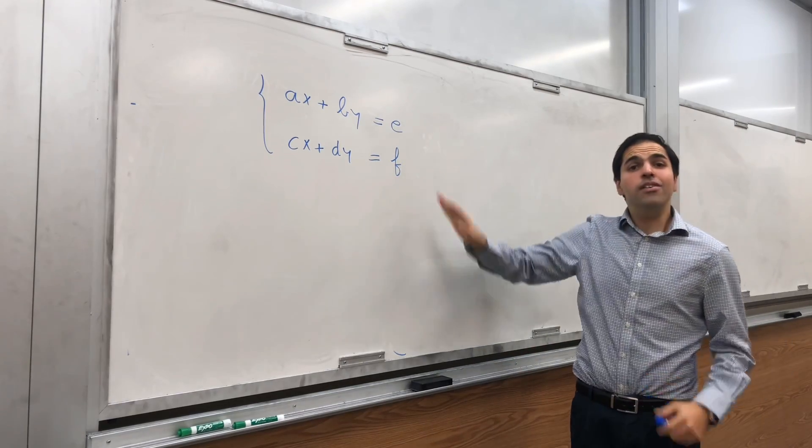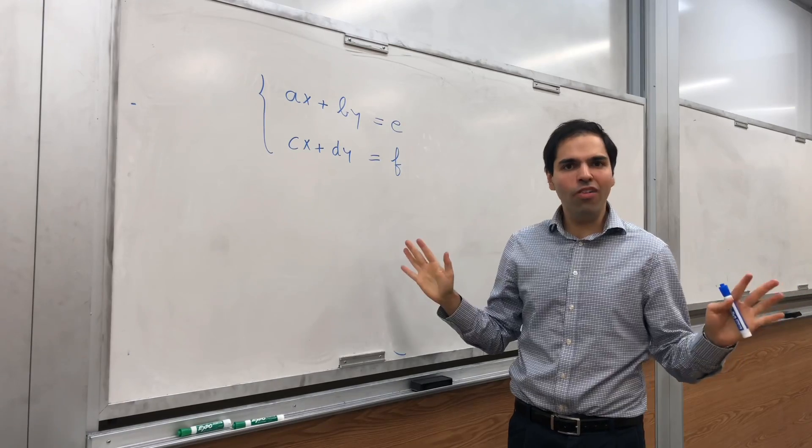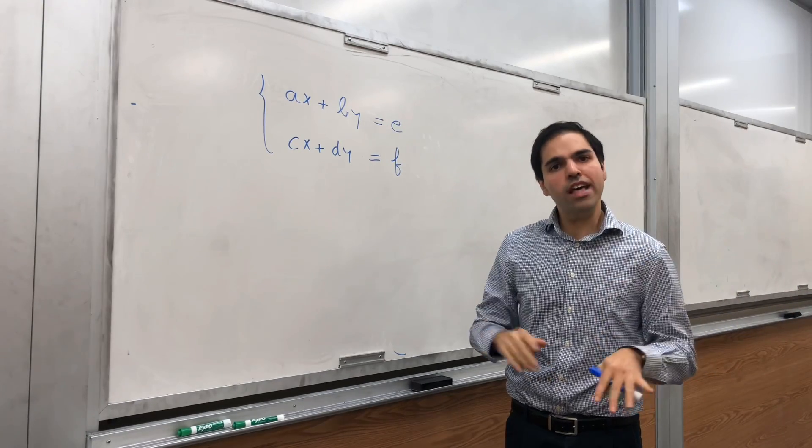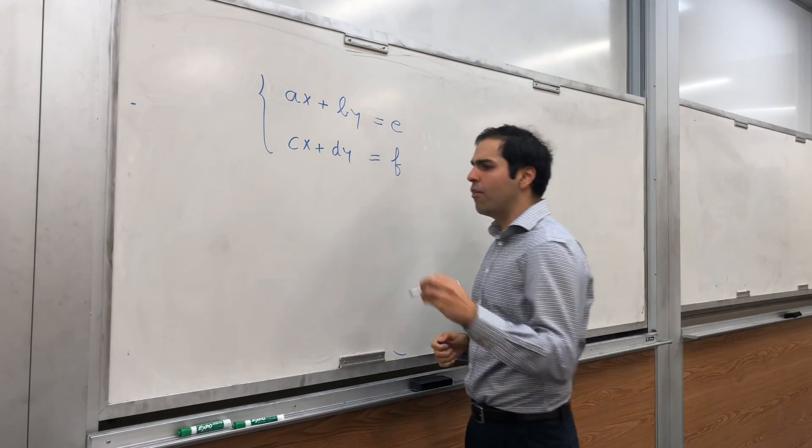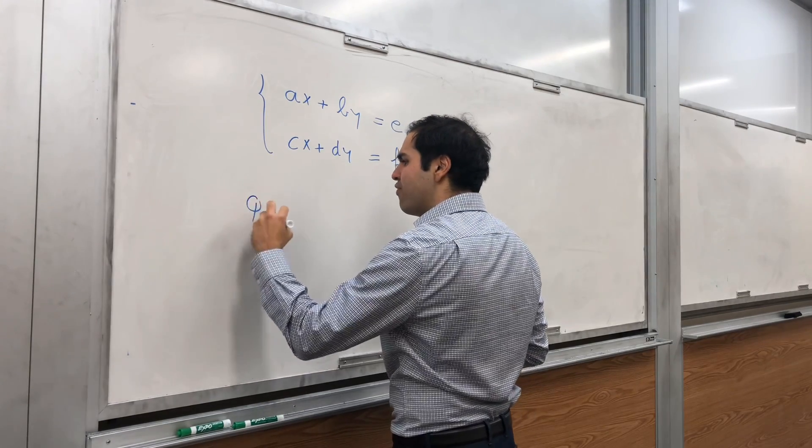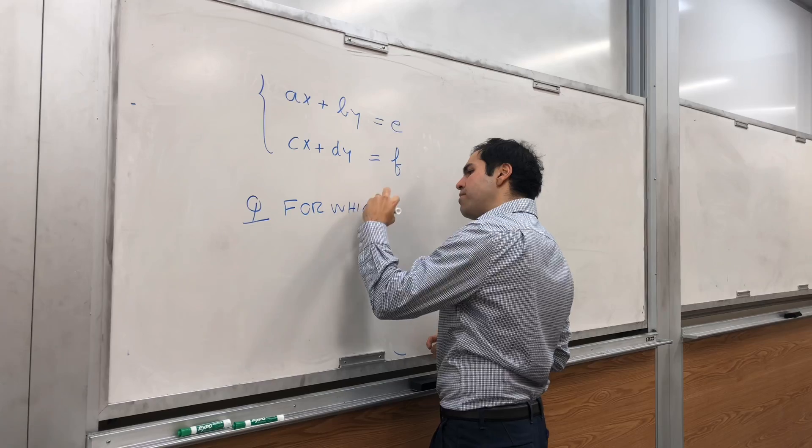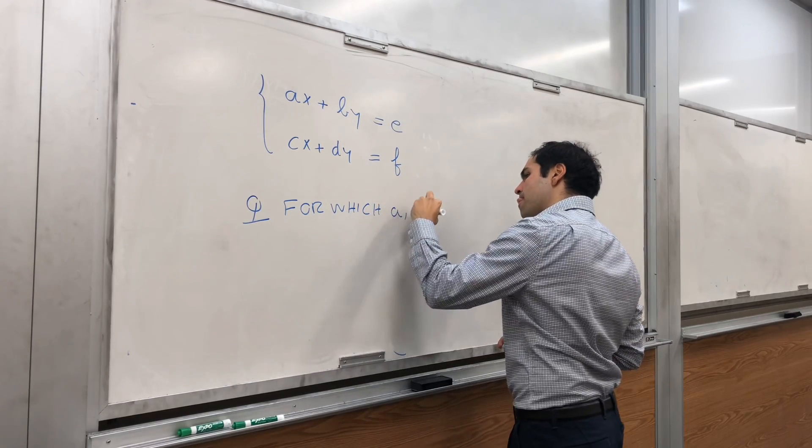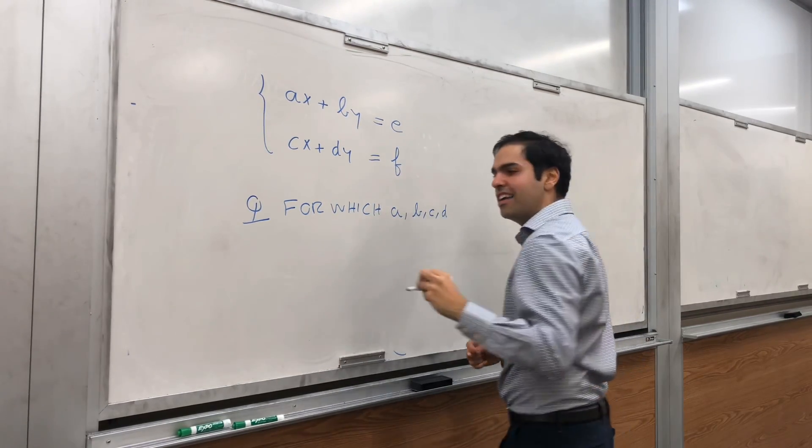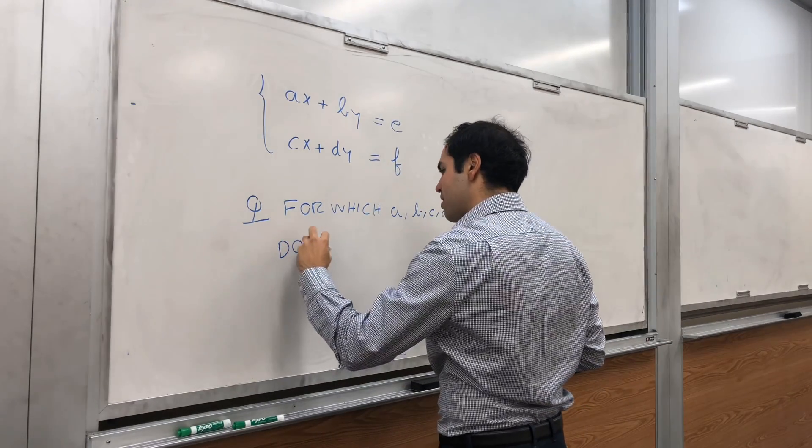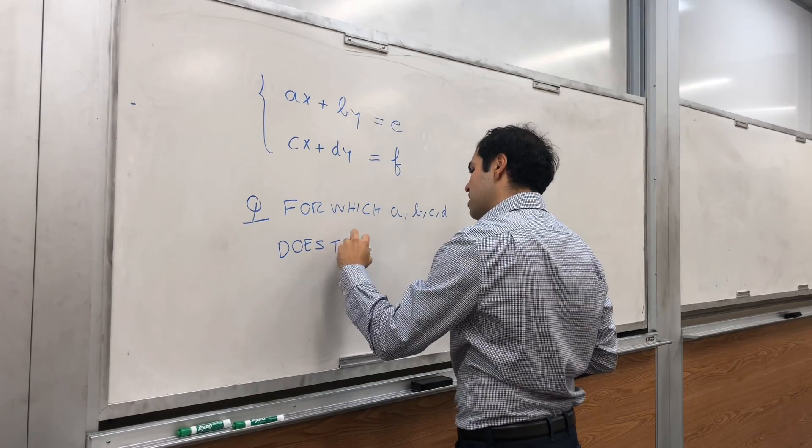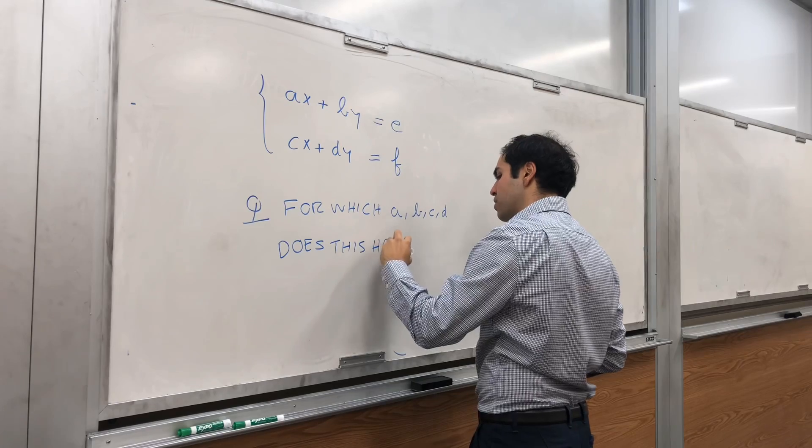And here, what's our goal? We don't want to quite solve it. I want to do something slightly easier. Namely, I want to answer the question for which A, B, C, D does this have exactly one solution?